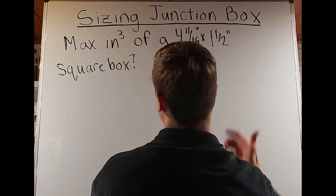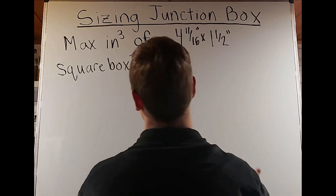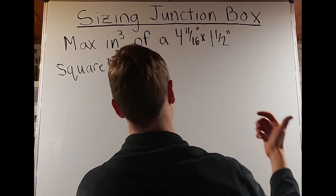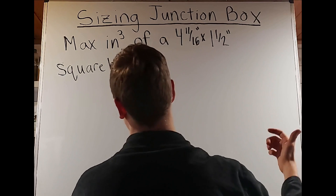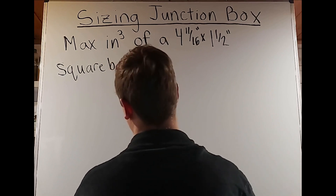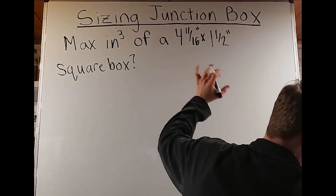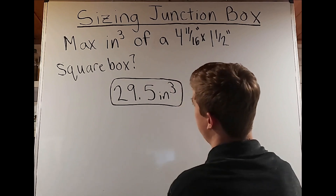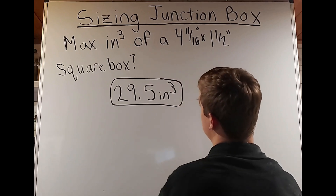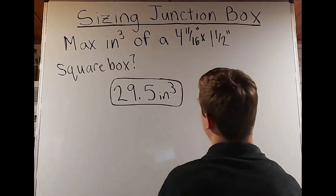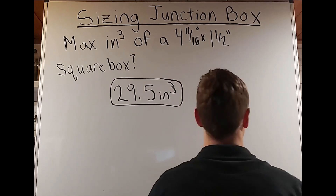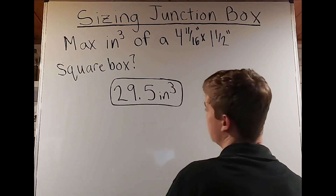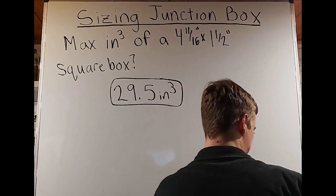Next: what is the maximum cubic inches of a four-and-eleven-sixteenths by one-and-a-half inch square box? We find that size under square box in the table and it gives us 29.5 cubic inches. We didn't have to do any math — we just had to look at the table. That's another very useful aspect of Table 314.16A.